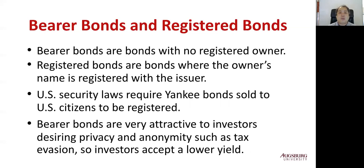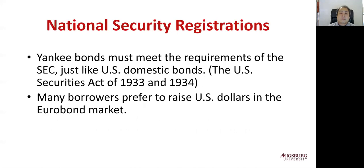US security laws require that Yankee bonds — foreign bonds in the United States sold to US citizens — must be registered. US investors who buy foreign bonds in the US cannot buy bearer bonds. Because bearer bonds offer some privacy benefits, investors usually accept a lower yield on them, so bearer bonds typically give a lower yield than registered bonds. Foreign bonds also have to meet the security regulations of the country where they are issued.